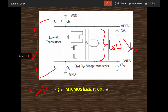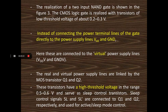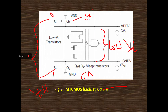SL and SL-bar are complementary inputs. When SL is zero, this transistor is in the on condition, and SL-bar being high means the other transistor is also on — so the circuit operates in normal mode. The low threshold voltage range for internal transistors is around 0.2 to 0.3 volts. Instead of connecting the power terminals directly to the power supply, we use VDD-gate, maintaining a virtual network.